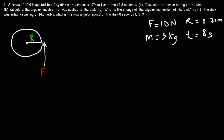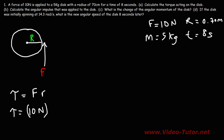Calculate the torque acting on the disc. The formula to calculate torque is force times the lever arm, which in this case is the radius of the circle. So we have a force of 10 newtons and the radius of the disc is 0.7 meters. 10 times 0.7 gives us a torque of 7 newton meters. That's the answer for part A.